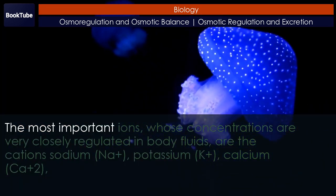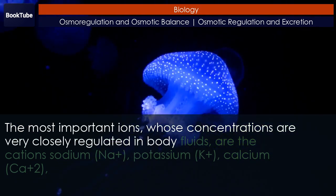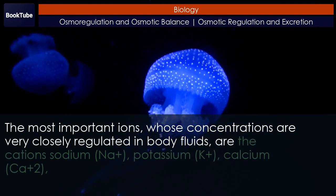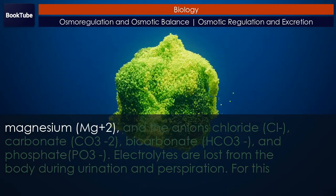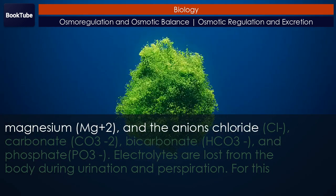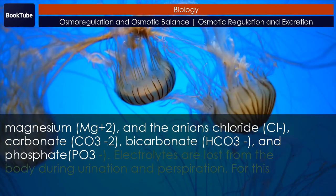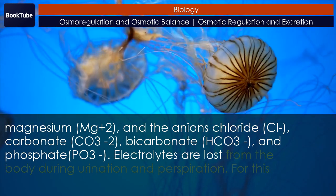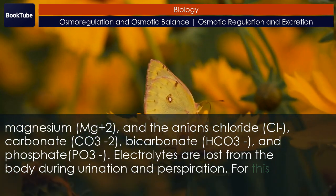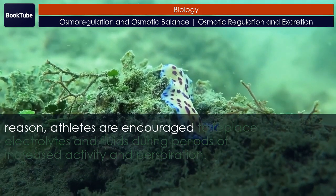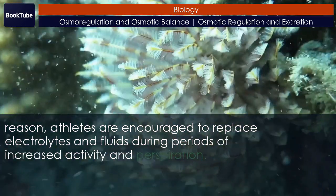The most important ions, whose concentrations are very closely regulated in body fluids, are the cations Na+, potassium (K+), calcium (Ca2+), magnesium (Mg2+), and the anions chloride (Cl-), carbonate (CO3 2-), bicarbonate (HCO3-), and phosphate (PO3-). Electrolytes are lost from the body during urination and perspiration. For this reason, athletes are encouraged to replace electrolytes and fluids during periods of increased activity and perspiration.